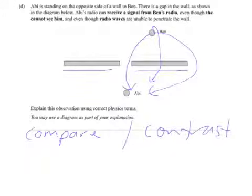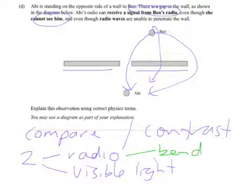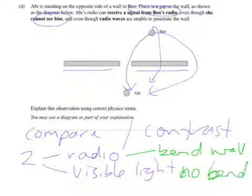We've got a radio signal, so radio, that's one set of waves, and we've got she cannot see him, so that's light, visible light waves. So the two things are radio electromagnetic radiation and visible light. Only one of those is bending around the wall or finding the gap and going through. Visible light is not, so this is a contrast. We might say that radio waves bend around the wall and light doesn't bend. They're both electromagnetic radiation, so that's a comparison, but only one of them will bend.